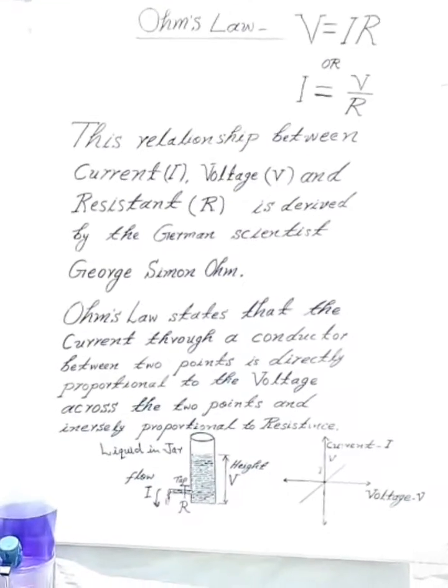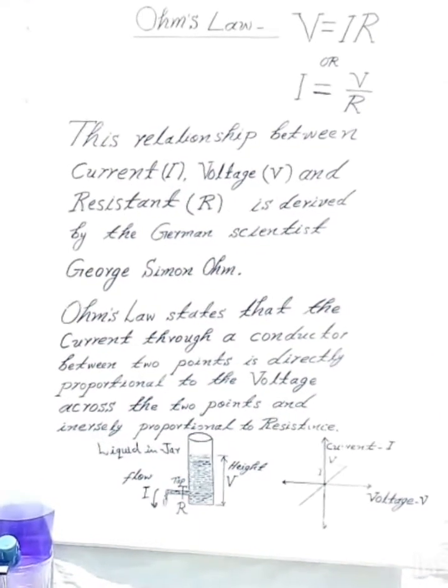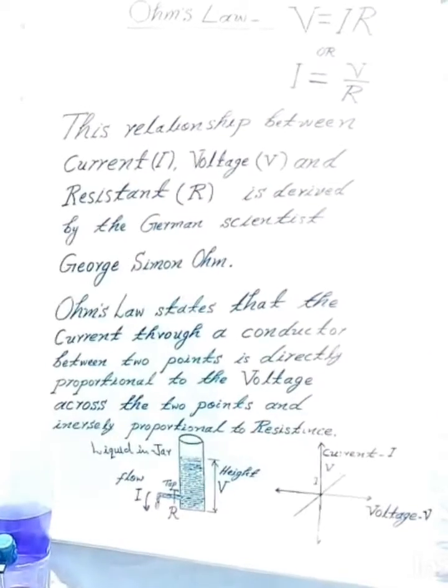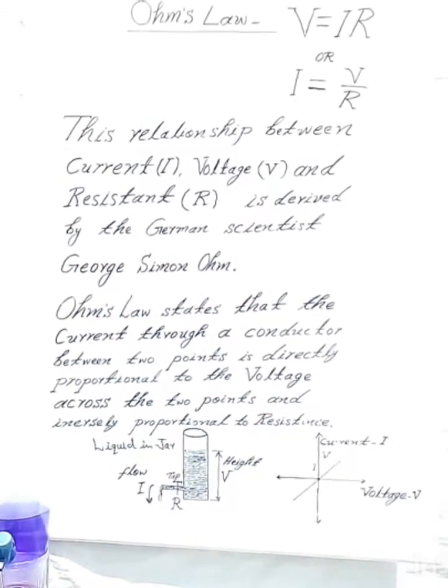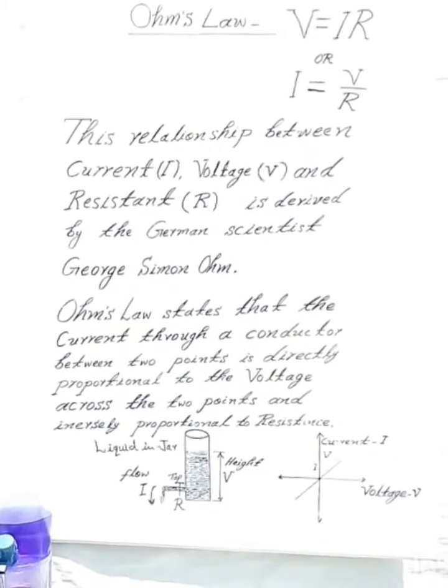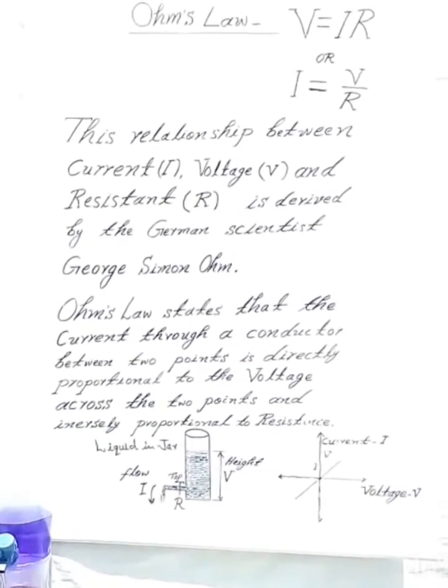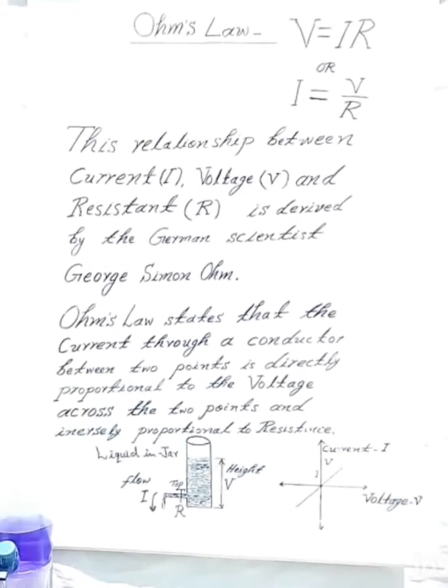In this video, I want to explain Ohm's law. V equals IR, or I equals V upon R. This relationship between current (I), voltage (V), and resistance (R) is derived by the German scientist George Simon Ohm.